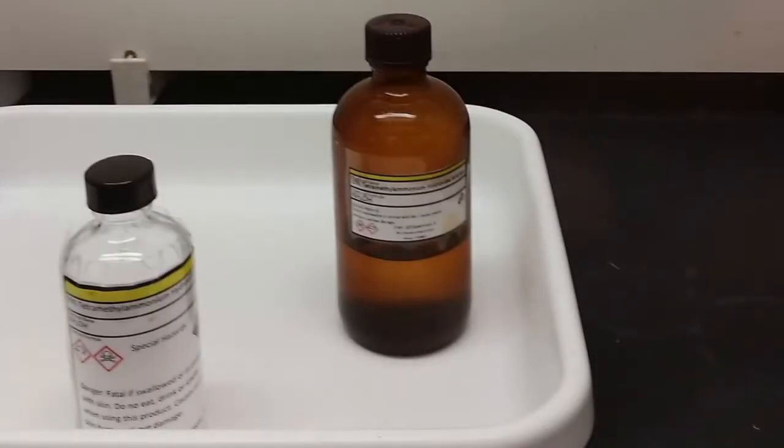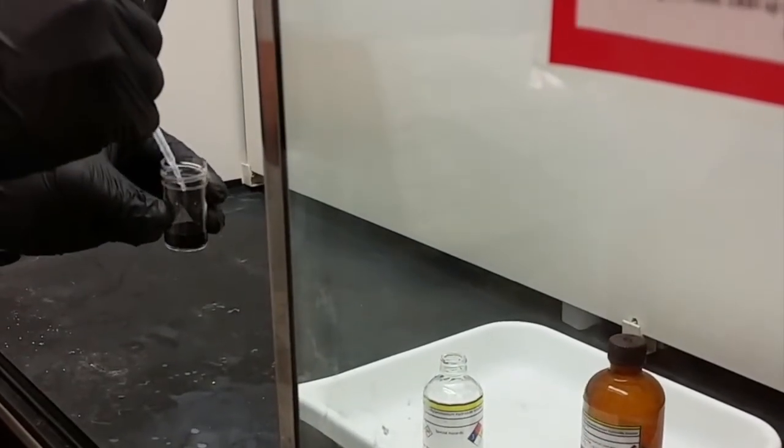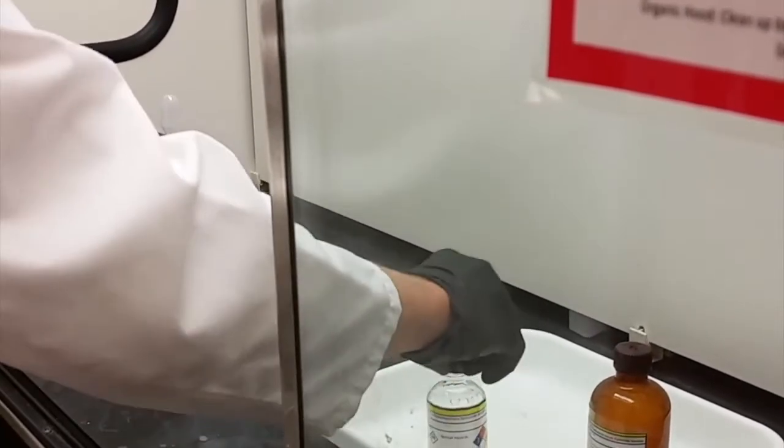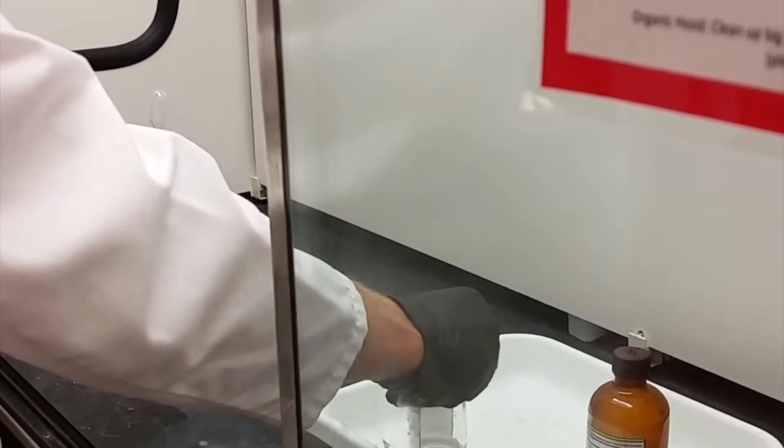The tetramethyl ammonium hydroxide, which acts as the surfactant in this experiment, will be kept in one of the large fume hoods. Be careful when you're handling this chemical and add the one milliliter that's called for directly into your plastic container.